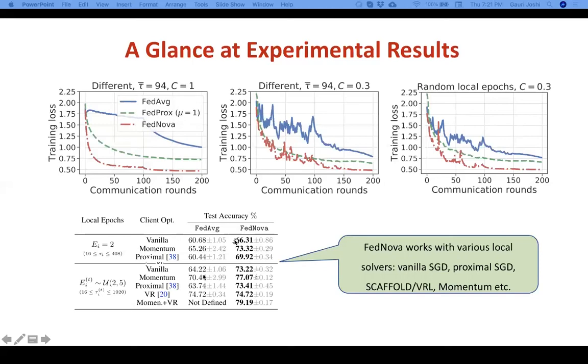So in this table, we are showing the test accuracy where the first column corresponds to using federated averaging to aggregate the updates. The second column is FedNOVA, which just tweaks these weights that are used to aggregate. And by keeping the local solver the same as before, we are able to get almost a 10% improvement in test accuracy.